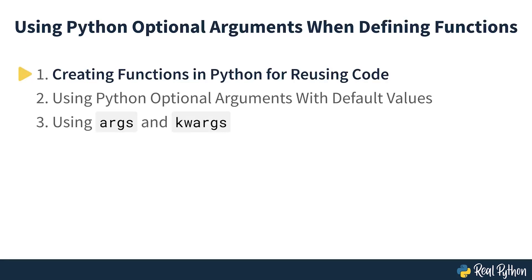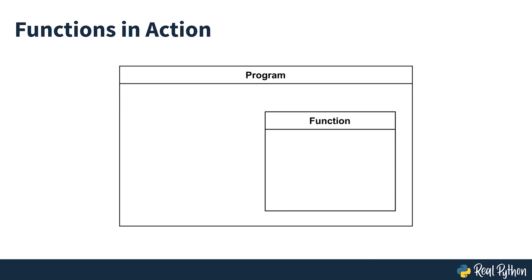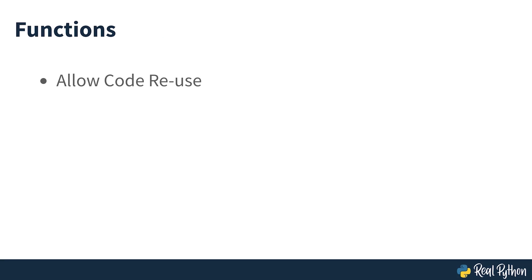Creating Functions in Python for Reusing Code. You can think of a function as a mini-program that runs within another program or within another function. The main program calls the mini-program and sends information that the mini-program will need as it runs. When the function completes all of its actions, it may send some data back to the main program that called it. The primary purpose of a function is to allow you to reuse the code within it whenever you need it, using different inputs if required.